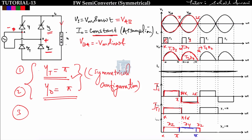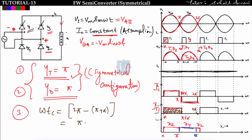For circuit turn-off time, we look at the time for which the thyristor is in reverse bias. Thyristor T1 conducts from alpha to pi+alpha, then goes into reverse bias from pi+alpha to 2pi. So ω·tc = 2pi − (pi + alpha) = pi − alpha, giving tc = (pi − alpha) / ω.